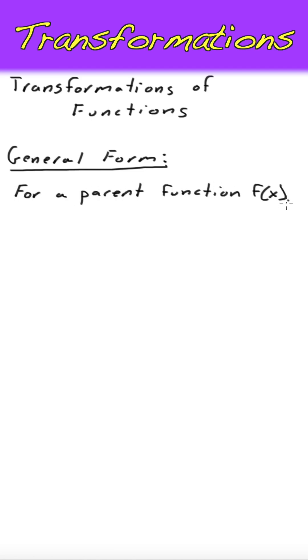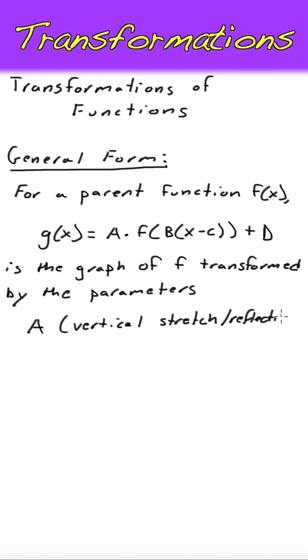For a parent function f of x, the function g of x equal to a times f of b times the quantity x minus c plus d describes a transformation of f based on parameters a, b, c, and d, each representing a different type of transformation.